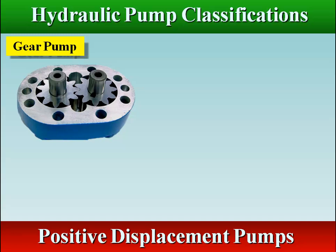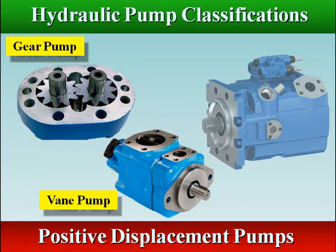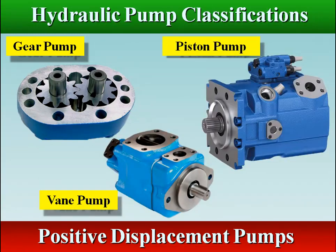Positive displacement pumps are commonly used in hydraulics because these types of pumps deliver a specific amount of fluid to the discharge port for every stroke, revolution, or cycle of the pump.